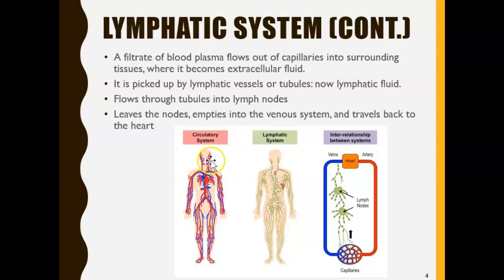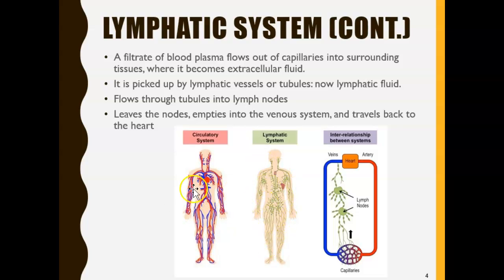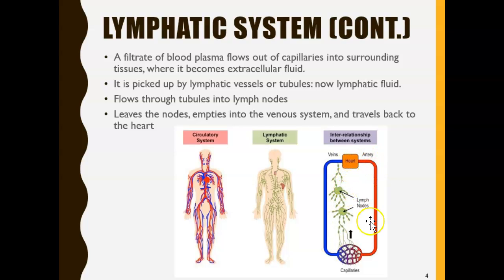Here we have the circulatory system — your arteries and veins — where your blood runs. Then we have the lymphatic system, and they're kind of intertwined. If you put them together, imagine the lymphatic system intertwined into the circulatory system. These are lymphatic vessels or tubules. Blood flows from an artery and then goes back to the vein and to the heart.